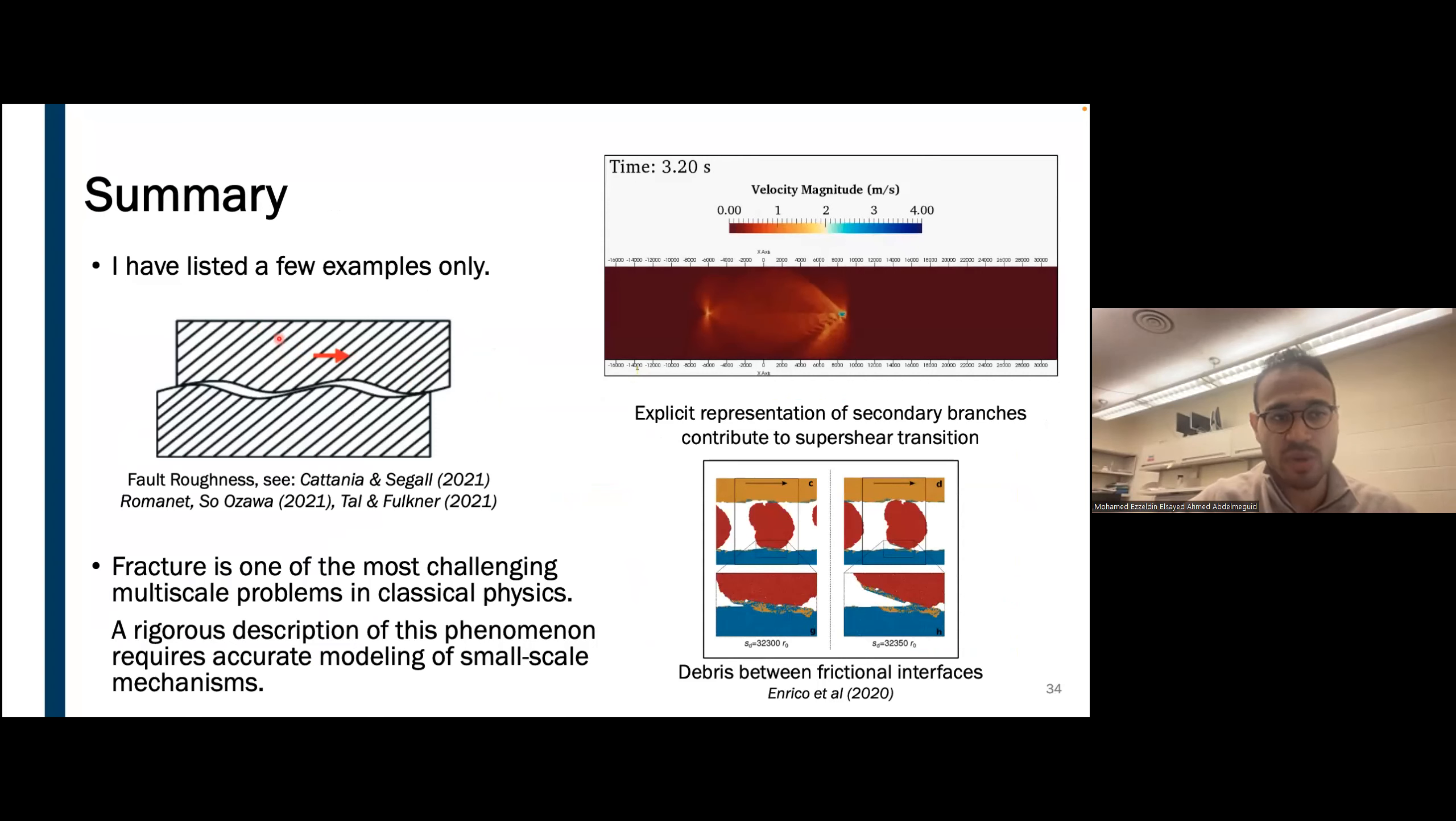Just a summary, what I listed before is just a sample of the complexity that we can include in fault zones. We can have roughness, we can have debris that are being trapped within the interface surface, or we can have these small interactions between the small branches and the main fault that can actually increase the rupture propagation speed. Fracture is one of the most challenging problems. A rigorous description of this phenomenon requires modeling small scale, so earthquakes become even a more complicated problem to tackle computationally. That will be all, so thank you for listening and please let me know if you have any questions.